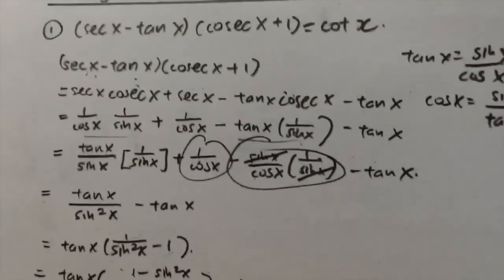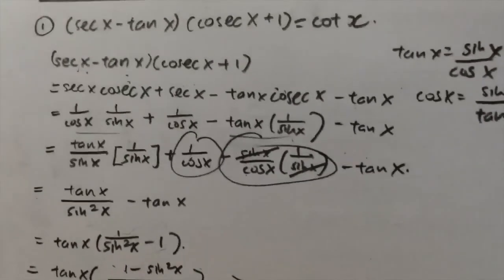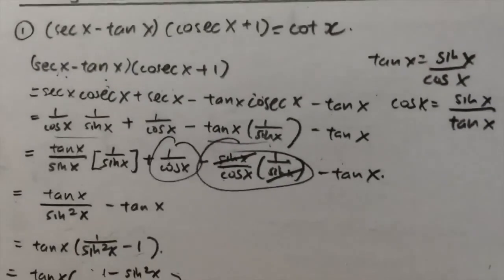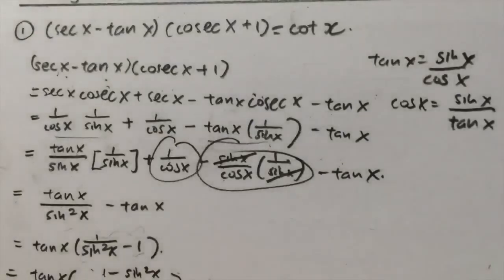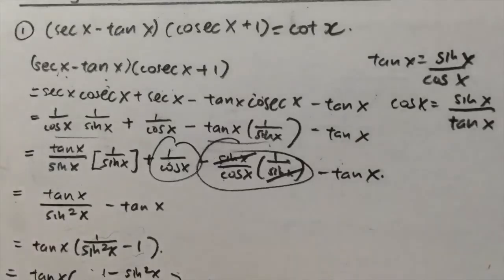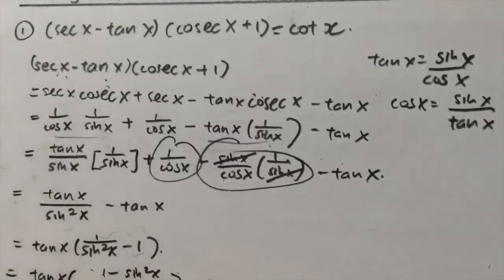So here we go — this is how we solve (sec x minus tan x)(csc x plus 1) equals cot x. There are many problems to solve, but the most important thing is to know how to approach the question based on its form.